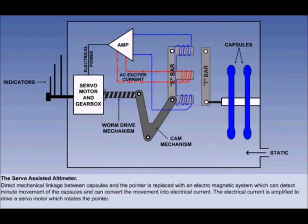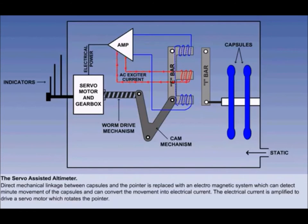A further refinement of the pressure altimeter is the servo-assisted altimeter, which gives improved accuracy, particularly at high altitudes, where the change in air pressure is much smaller than at low altitudes for a given change in height. The principle is that direct mechanical linkage between the aneroid capsules and the pointer is replaced with an electromagnetic system. Minute movements of the capsules can be sensed by this system and converted into electrical current by an electromagnetic pick-off. The electric current generated is amplified and used to drive a servo motor which rotates the pointer. We can see here in diagrammatic form how this is achieved.